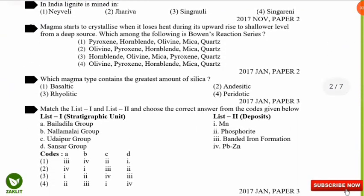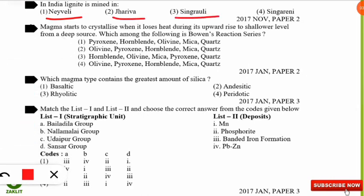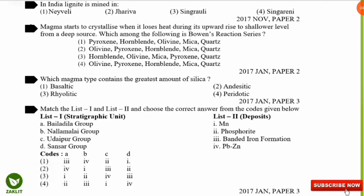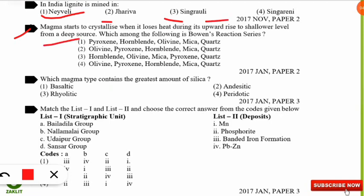The next question, from the 2017 UGC NET paper: in India, lignite is mined in which of the following places — Neyveli, Jharia, Singrauli, or Singareni? The correct option is option 1 — Neyveli, situated in Tamil Nadu, is famous for lignite mining in India. The next question asks about Bowen's reaction series, which is very frequently asked in the NET environmental science paper.